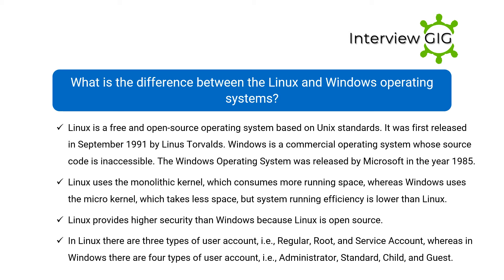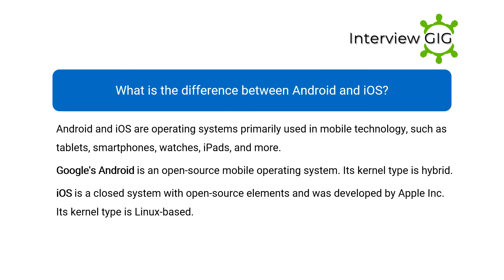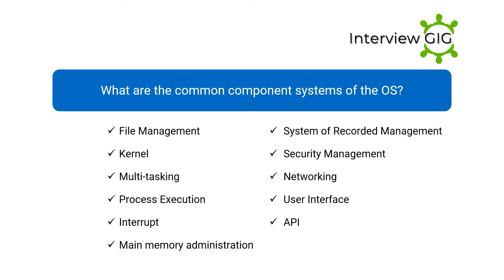What is the difference between Android and iOS? Android and iOS are operating systems primarily used in mobile technology such as tablets, smartphones, watches, iPads, and more. Google's Android is an open-source mobile operating system; its kernel type is hybrid. iOS is a closed system with open-source elements, developed by Apple Incorporated; its kernel type is Linux-based.